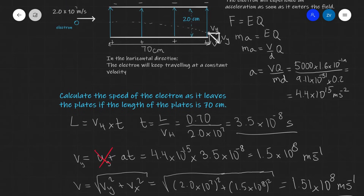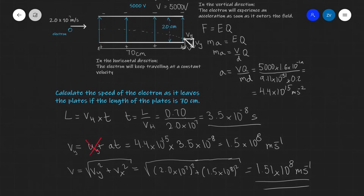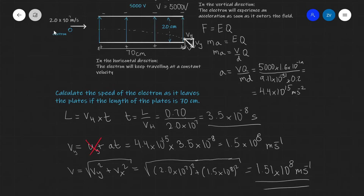This is a typical problem on charged particles moving in electric fields. The key principles are: first, the electron experiences a vertical acceleration given by a = vq/(md); second, the horizontal motion is uninterrupted with constant speed because the force only acts in the vertical direction.